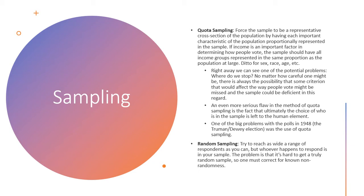If you have a sample with too many of one demographic category and not enough of another, you might use quota sampling to correct that. For example, if income were an important factor in how people vote, the sample should have all income groups represented in the same proportion as the population at large — ditto for sex, race, age, etc. For an issue poll, you'd want to know if any demographic factors were likely to affect how people thought about a certain topic.